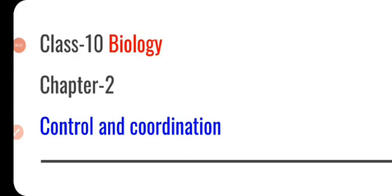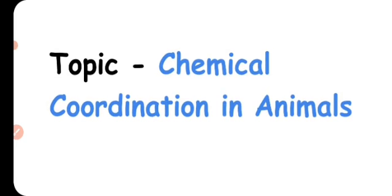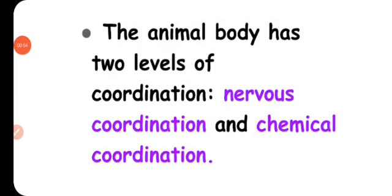Hello students, welcome back. This is a Class 10th biology video on Chapter 2, which is Control and Coordination. In this chapter we study how different systems work in our body to control and coordinate all the organs and cells together so that our body can survive and maintain homeostasis. Today's topic is chemical coordination in animals. In the previous video we discussed neural coordination done by the nervous system.